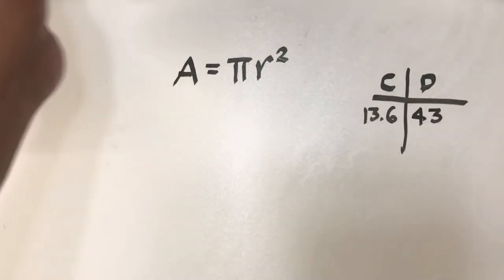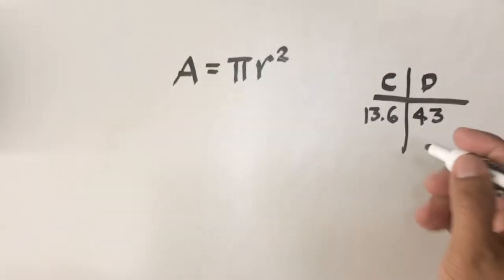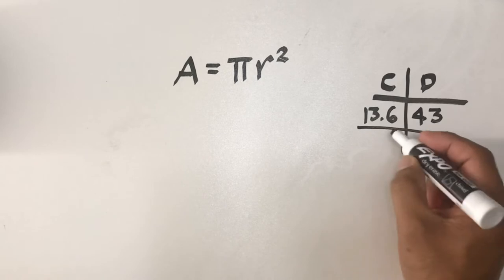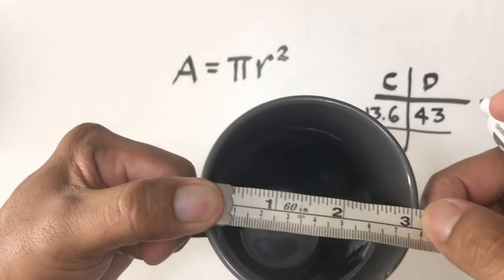Then let's measure the circumference of this next circle. I get about 10 and the diameter is about 3.1.